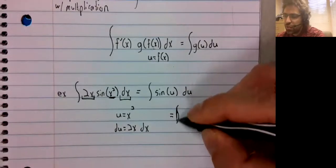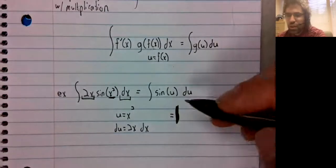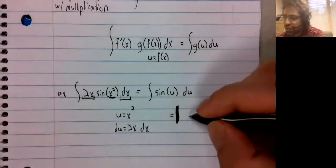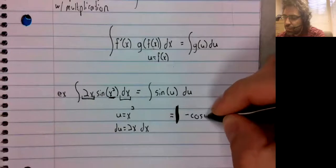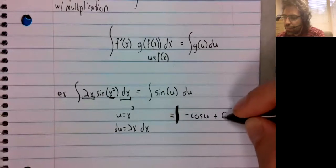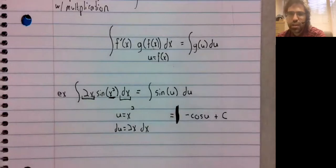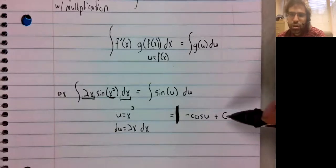We're ready to just take the integral. The antiderivative of the sine is the negative cosine of u. We have our constant of integration.